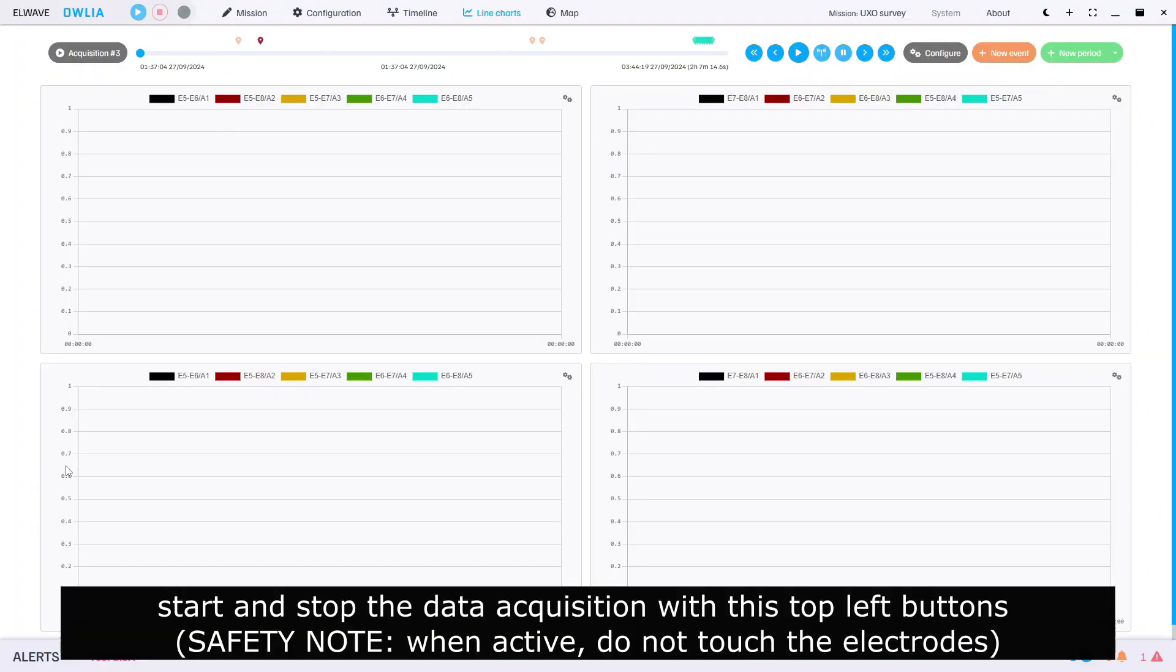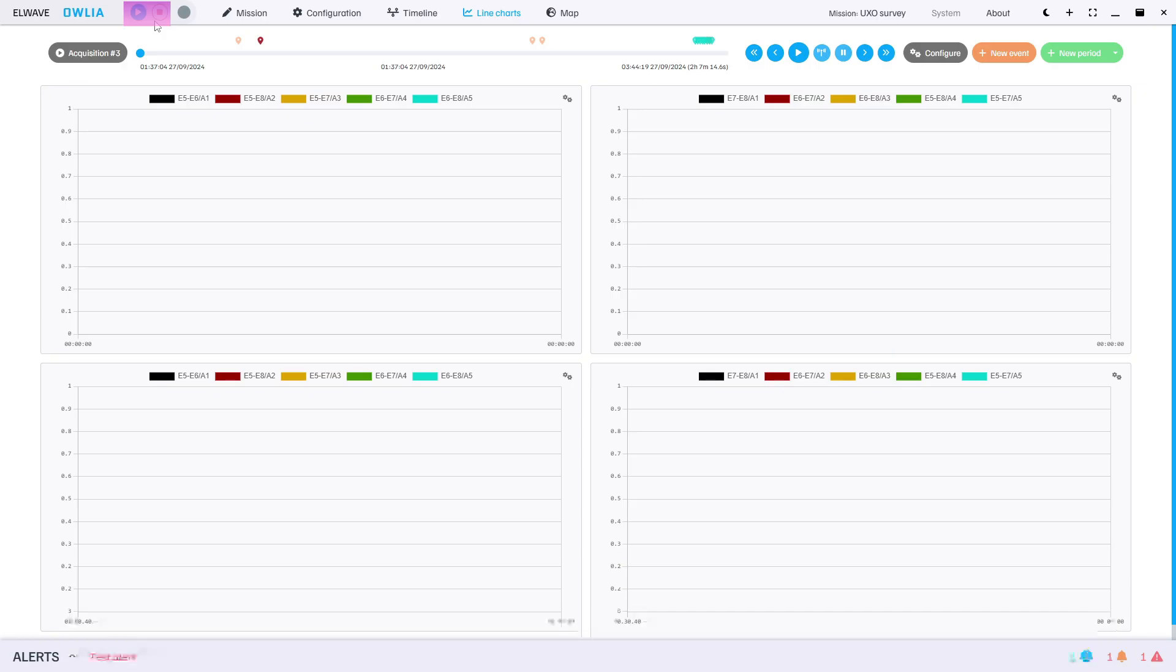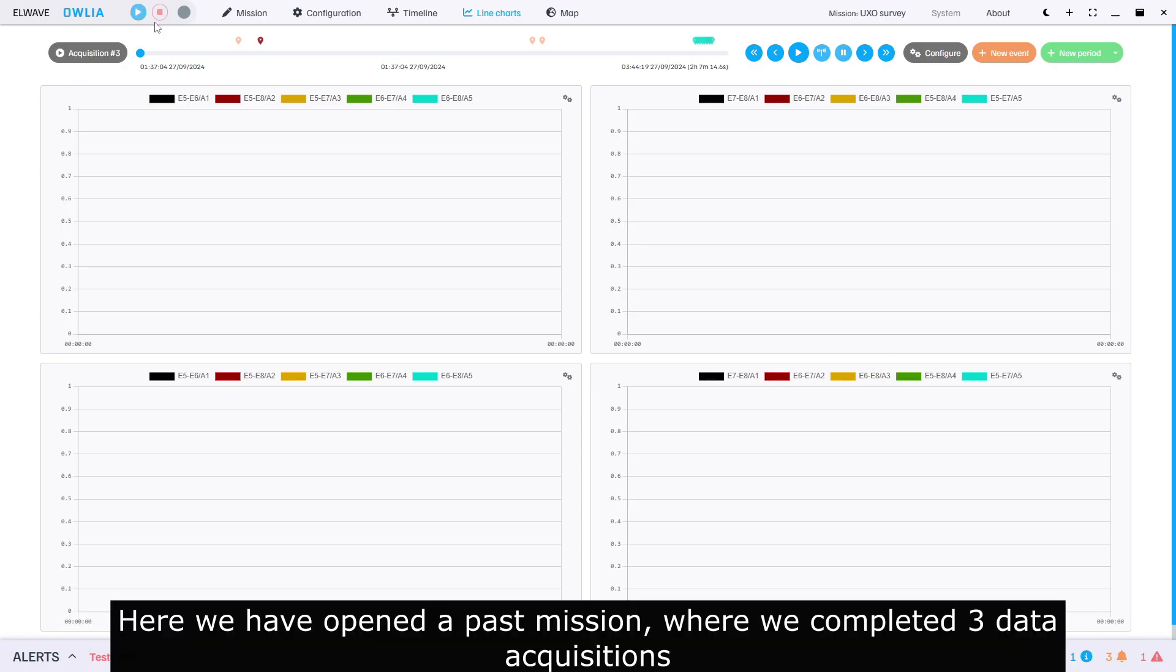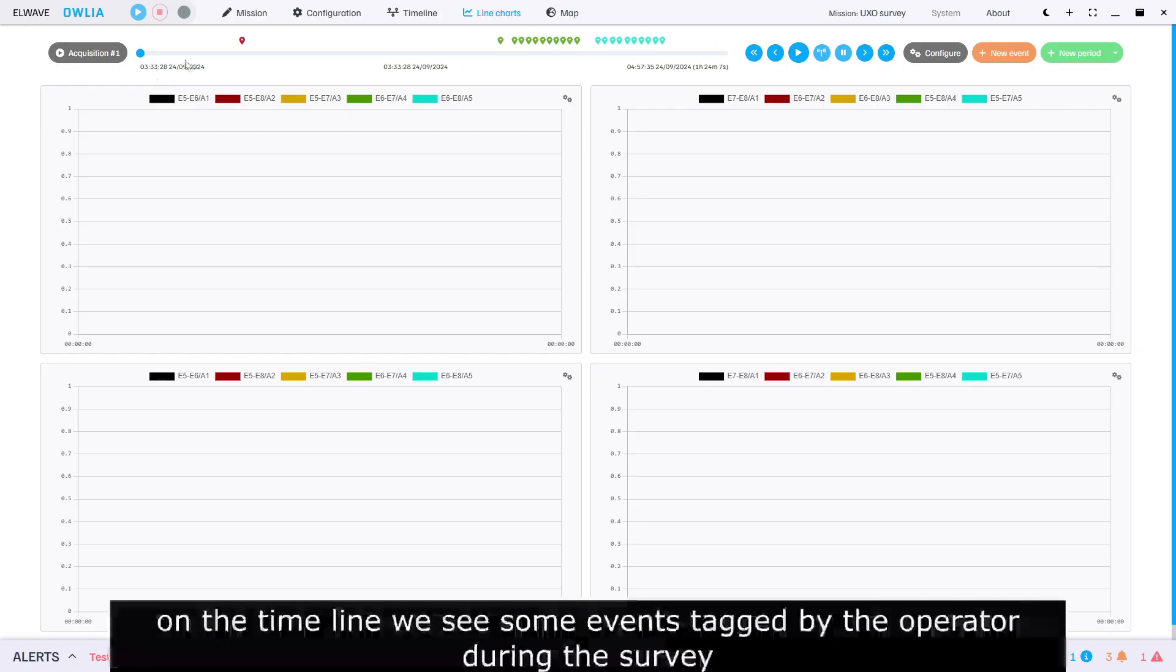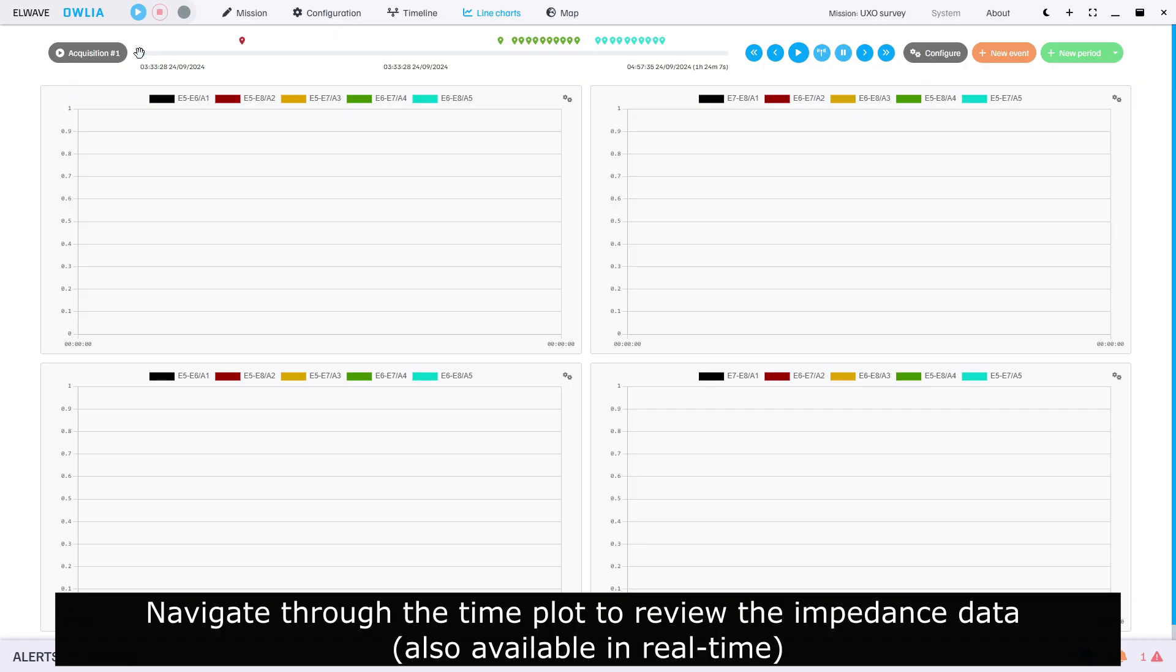In the Alia interface, start and stop the data acquisition with these top left buttons. Here we have opened a past mission where we completed three data acquisitions. Let's review acquisition one. On the timeline we see some events tagged by the operator during the survey. Navigate through the time plot to review the impedance data.